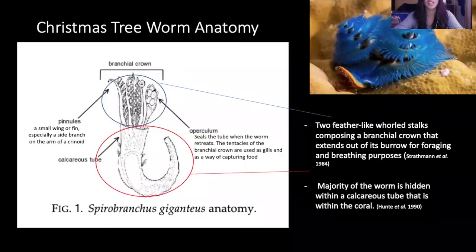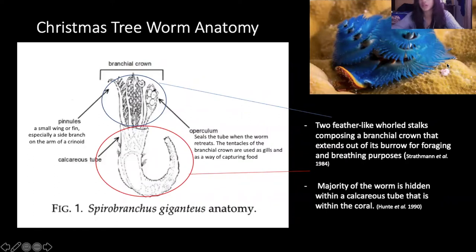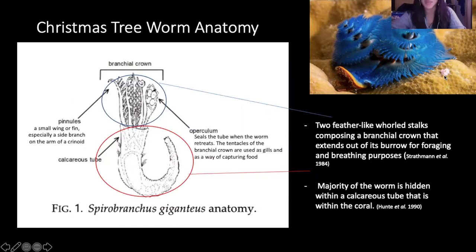Here we see the Christmas tree worm anatomy. As you can see in the picture on the right side, they have two feather-like spiral stalks that are composed of branchial crowns. These extend out of the burrow and serve as their way of looking for food and eating, and also serve as a respiratory system. The majority of the worm is hidden within a calcareous tube that is within the coral.